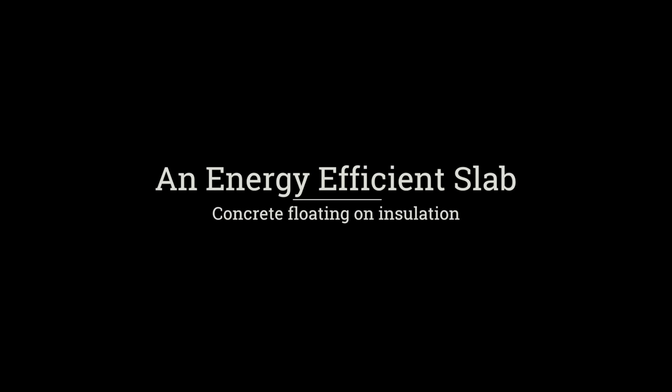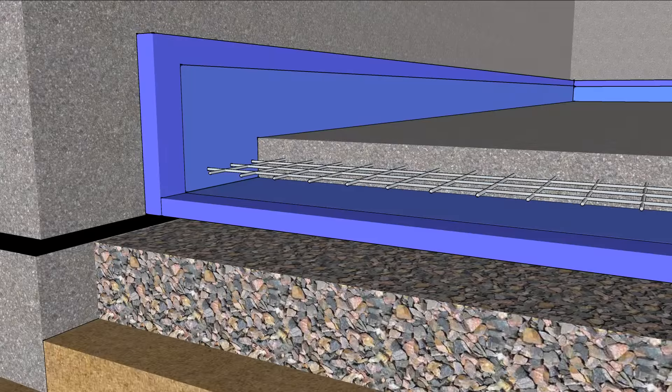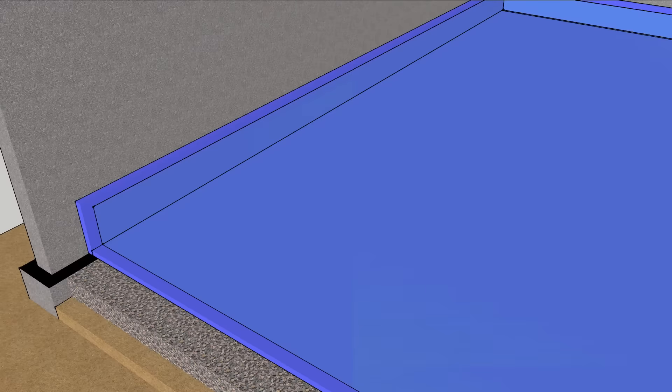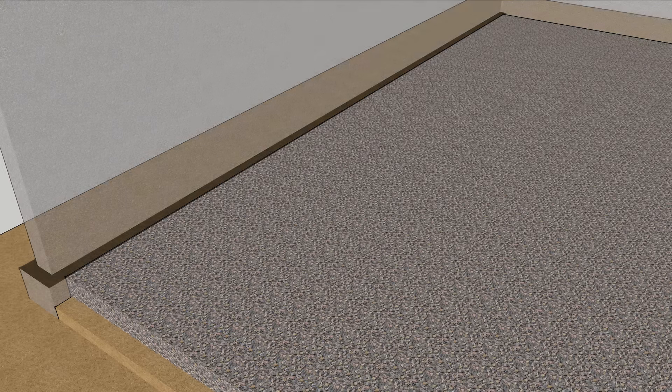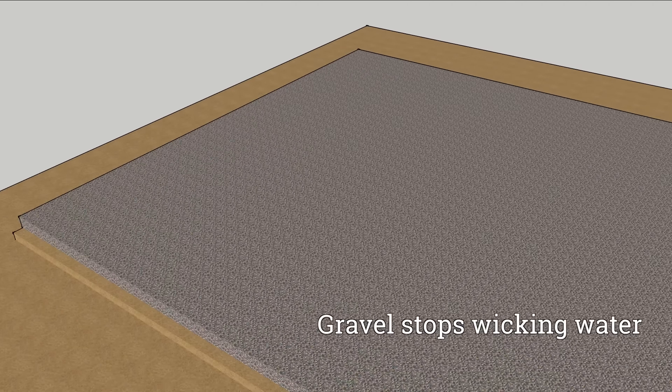An energy-efficient slab is isolated from the ground with insulation. This keeps the slab warm, but it's also important to keep a slab dry. That begins with gravel. Air spaces between the stones break the wicking of capillary action.